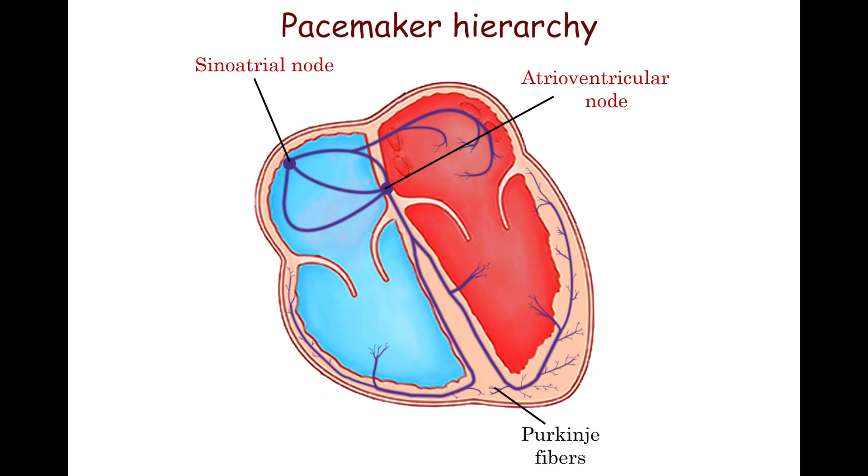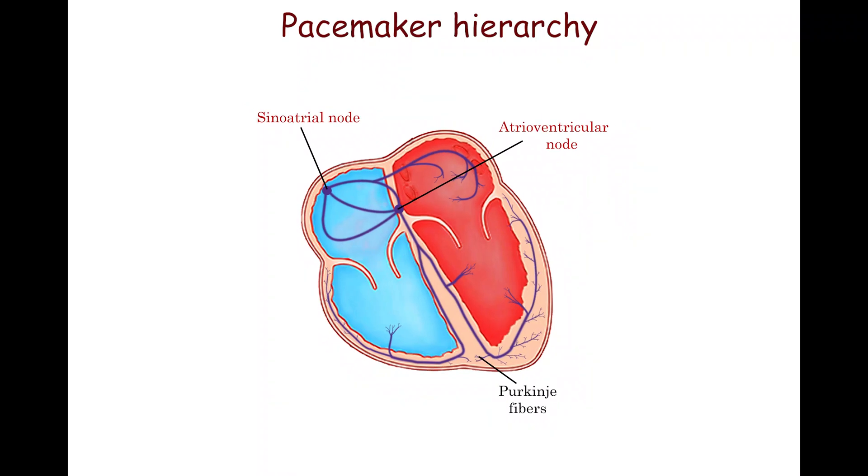There are the following cardiac structures in the pacemaker hierarchy: sinoatrial node, atrioventricular node, and His-Purkinje network. The sinoatrial node has the fastest depolarization rate, normally 60 to 100 beats per minute.